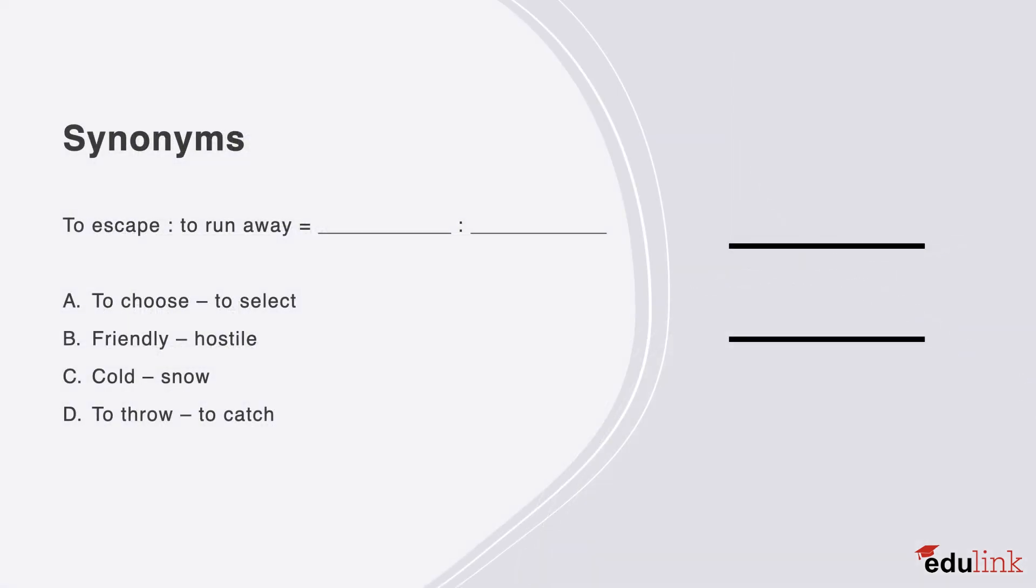The next type are synonyms. You have time now to consider the following possibilities. The correct answer is A. To escape and to run away are synonyms, just like to choose and to select.